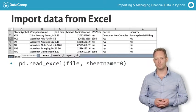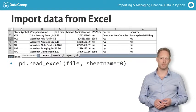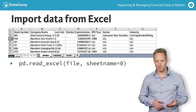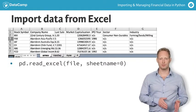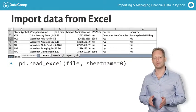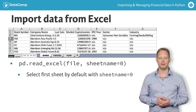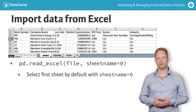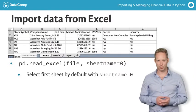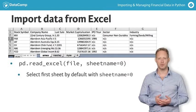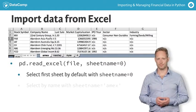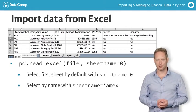You can use the parameter sheet_name to tell read_excel which worksheet to import. You have several options to import either a single sheet or multiple sheets simultaneously. First, you can provide an integer that refers to the position of the worksheet — the number zero means you want to import the first sheet. You can also refer to a sheet by its name.